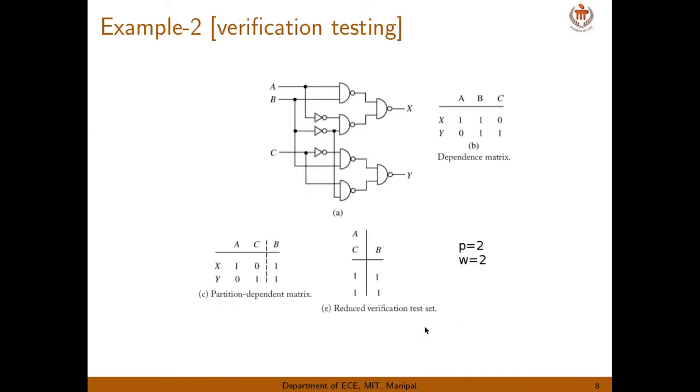Now one more technique. This is the modification of the previous technique. Here, if there are multiple outputs, and each output, if we can write as a subset of a particular number of inputs, then we can propose a method to reduce the number of test vectors. How? Take an example.